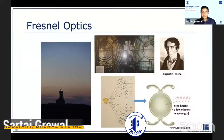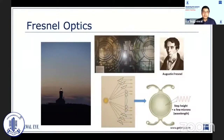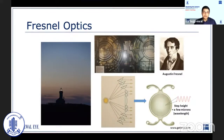In 1821, Augustine Fresnel, an engineer in the French army, developed a lens to help improve the visibility of lighthouses. Named after him, the Fresnel optic was a lens with some parallel blocks of glass removed, and it could collect most of the lamp's light and focus it towards the horizon. Diffractive IOLs used today are a distant derivation from the same principle of Fresnel optics.